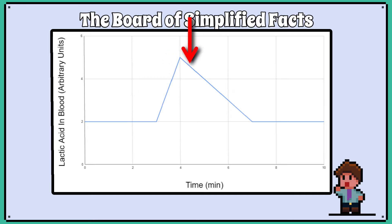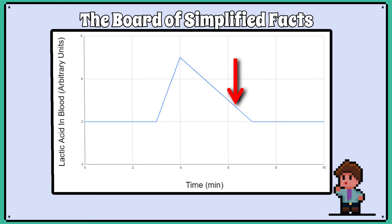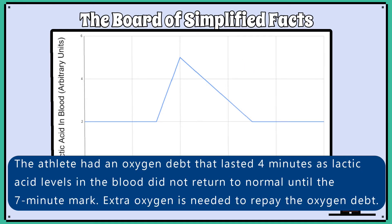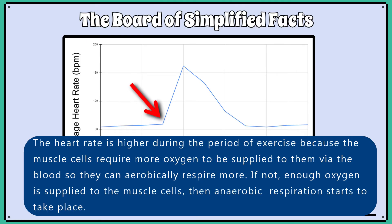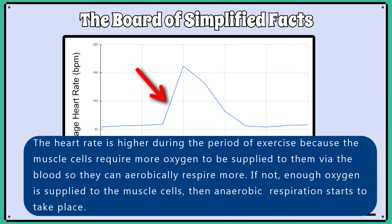Between 4 minutes and 7 minutes, we see a gradual decline in lactic acid levels in the blood. The athlete had an oxygen debt that lasted 4 minutes, as lactic acid levels in the blood did not return to normal until the 7-minute mark. The heart rate is higher during the period of exercise because the muscle cells require more oxygen to be supplied to them by the blood so they can aerobically respire more.